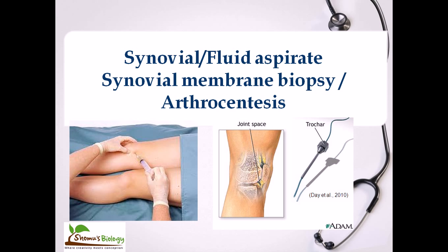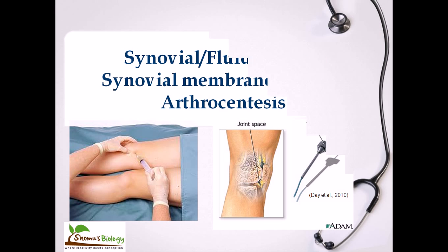People can also use the synovial fluid aspiration process. It is a relatively simple process — just insert a syringe and take out the synovial fluid from the joint. However, it requires proper insertion by an expert technician to get pure synovial fluid rather than blood. Once the synovial fluid is extracted, and sometimes also a small part of the synovial membrane using a trocar, the biopsy of the synovial membrane and chemical analysis of the synovial fluid can tell us whether there is any problem in the joint.